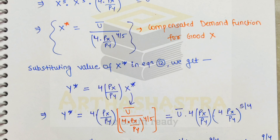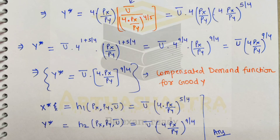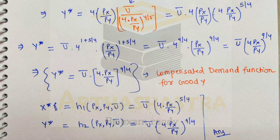To find the compensated demand function for good y, we substitute x* into equation 12: y* = 4·(px/py)·x*. Replacing x* with ū / [4·(px/py)]^(4/5) and reciprocating the denominator, we get y* = ū × [4·(px/py)]^(9/4) — wait, simplifying: y* = ū·[4·(px/py)]^(9/4). So the compensated demand function for good y is y* = ū·[4·px/py]^(9/4).